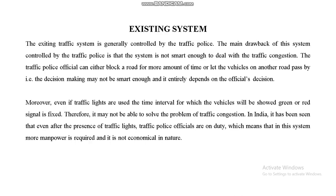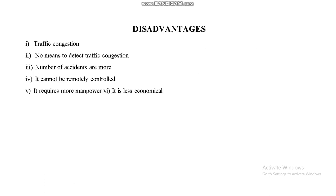Introduction — the existing system. In the existing system, only humans or a traffic pole are able to control the traffic lights. The disadvantages are: traffic congestion, no means to detect traffic congestion, more accidents, it cannot be remotely controlled, requires more manpower, and is less economical.